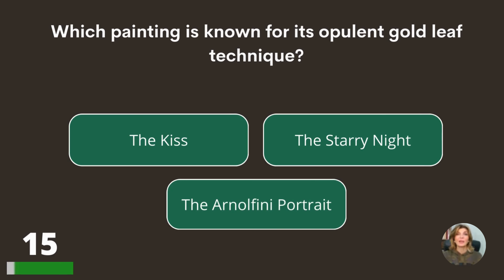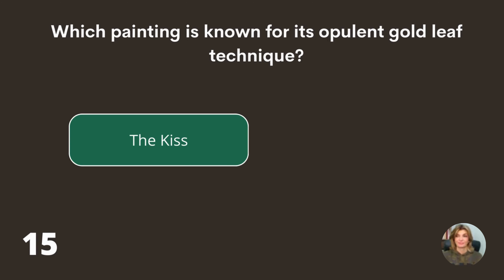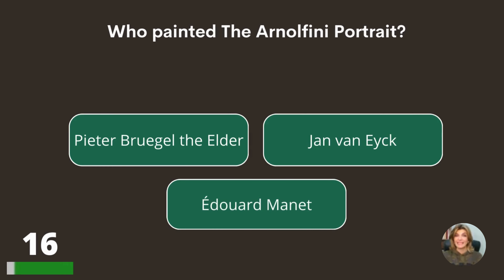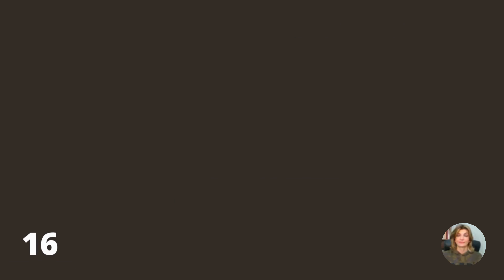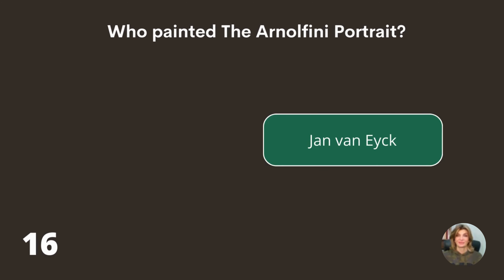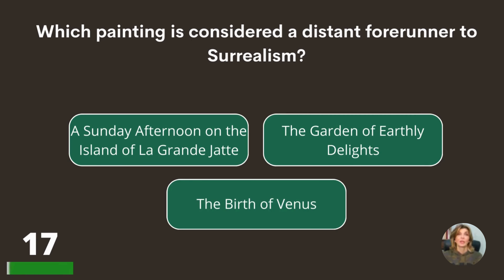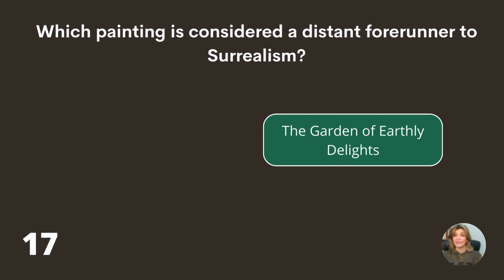Which painting is known for its opulent gold leaf technique — The Kiss, The Starry Night, or the Arnolfini Portrait? Who painted the Arnolfini Portrait — Pieter Bruegel the Elder, Jan van Eyck, or Édouard Manet? Which painting is considered a distant forerunner to surrealism — A Sunday Afternoon on the Island of La Grande Jatte, The Garden of Earthly Delights, or The Birth of Venus? The Garden of Earthly Delights.